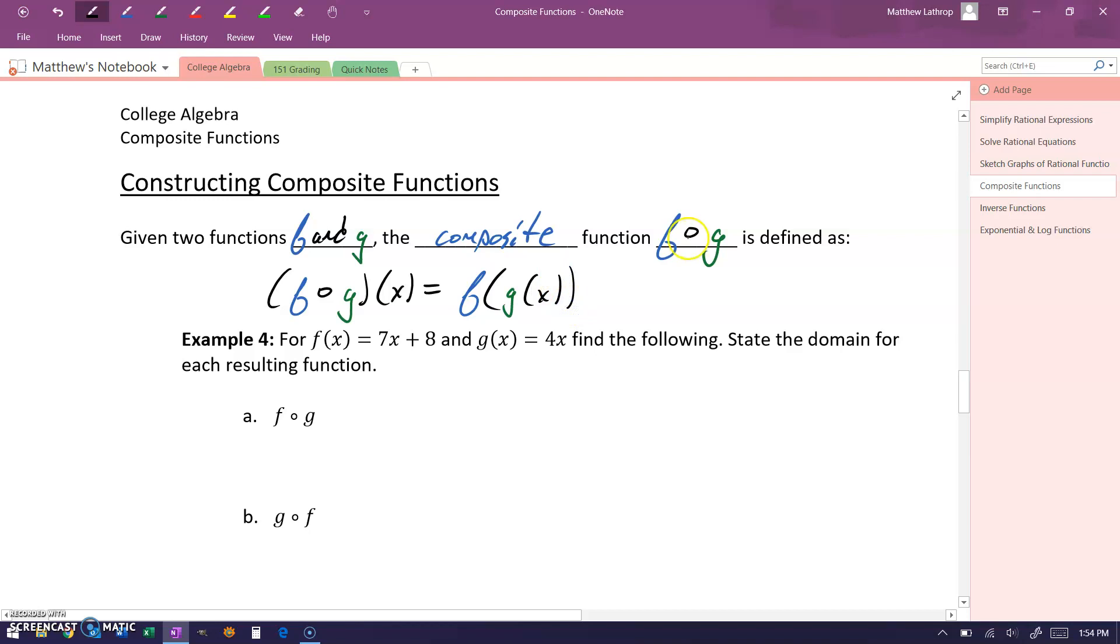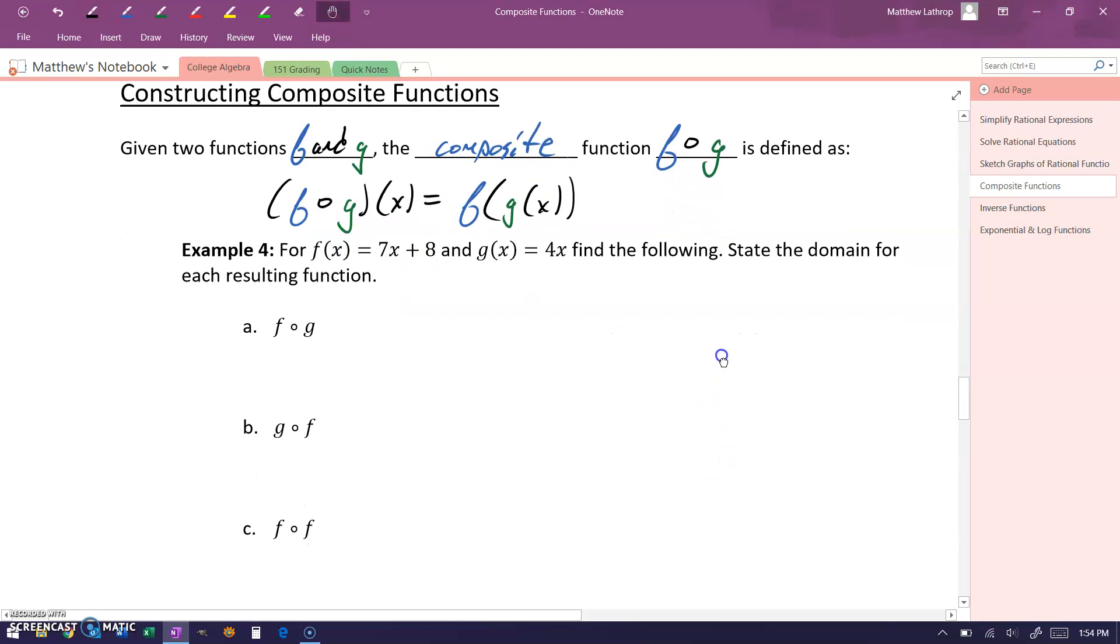So whenever we use this open circle notation between two functions, it means we're creating this composition of these two functions, where we take that second function that's listed and essentially plug that into the first function and simplify that result.